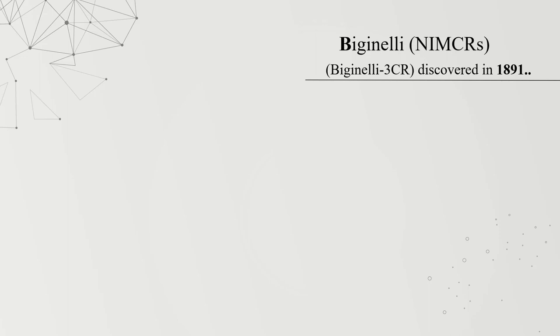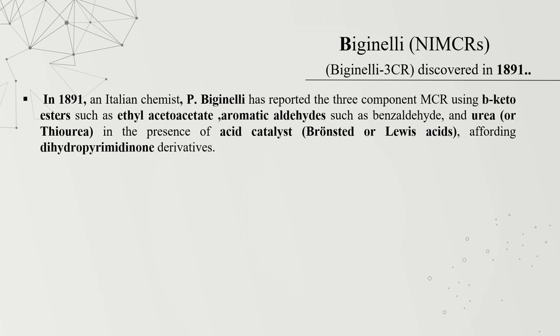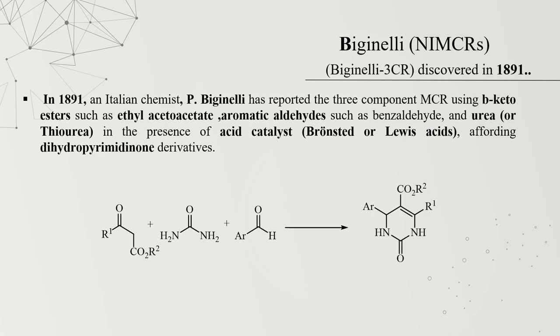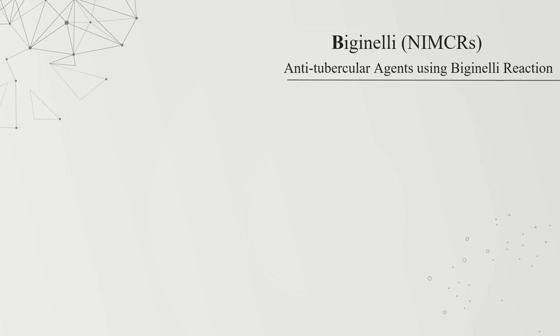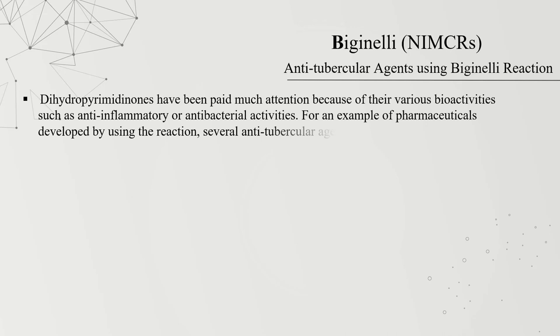Another example of multi-component reactions is the Biginelli reaction, which is a non-isocyanide MCR. It is one of the most remarkable MCR examples, discovered in 1891, and a comprehensive review covering these reactions with more than 500 references has recently appeared. The original Biginelli condensation involves the reaction of aromatic aldehyde, urea or thiourea, and beta-ketoester under strong acidic conditions to give 3,4-dihydropyrimidin-2(1H)-ones, though it often suffers from low yield when aliphatic or substituted aromatic aldehydes are employed. Dihydropyrimidines have received much attention due to various bioactivities such as anti-inflammatory and antibacterial properties. Several anti-tubercular agents have been reported using these reactions.